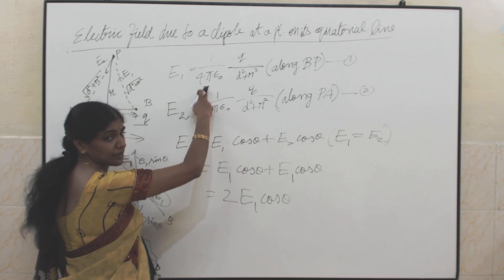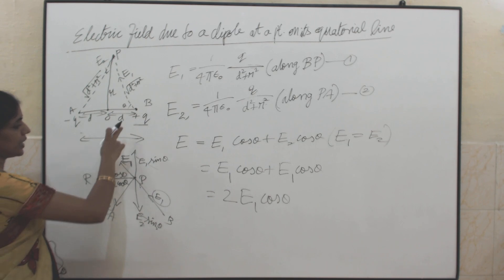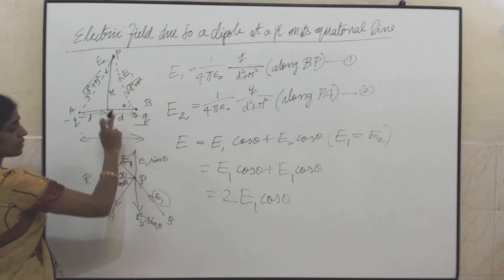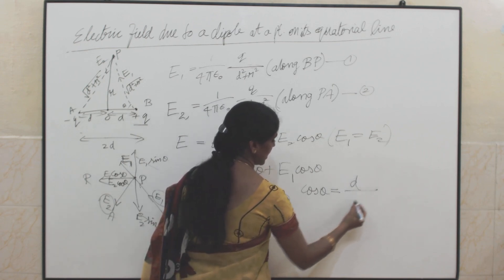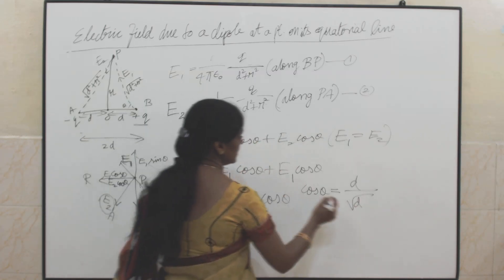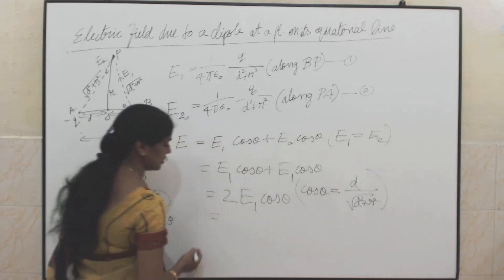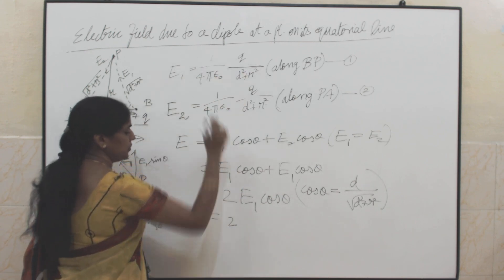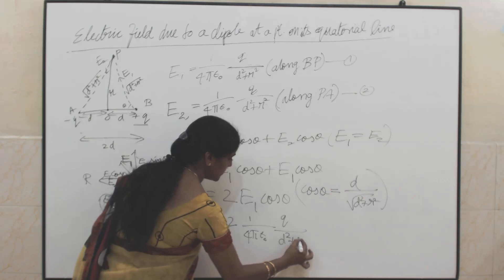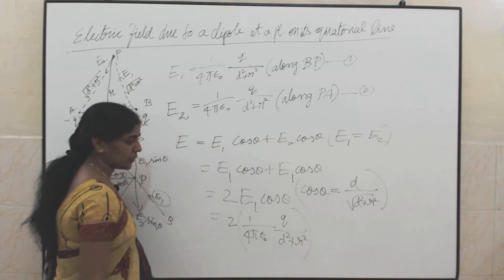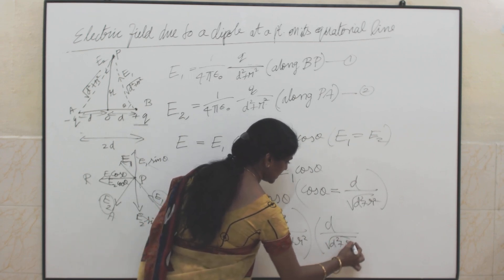We know E1 equals 1 by 4 pi epsilon, over (D squared plus R squared). Now we want to find cos theta. Let this angle be theta; cos theta equals adjacent side by hypotenuse, which is D by root of (D squared plus R squared). Substituting the values of E1 and cos theta into the equation, it becomes 2 times [1 by 4 pi epsilon over (D squared plus R squared)] times [D by root of (D squared plus R squared)].